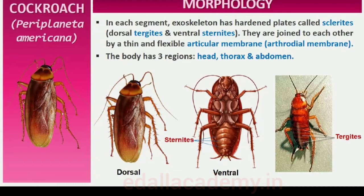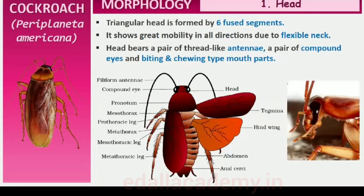The head is triangular in shape and lies anteriorly at right angles to the longitudinal body axis. It is formed by the fusion of six segments and shows great mobility in all directions due to a flexible neck. The head capsule bears a pair of compound eyes. A pair of thread-like antennae arise from membranous sockets lying in front of the eyes. Antennae have sensory receptors that help in monitoring the environment.